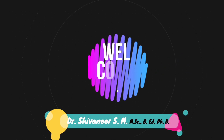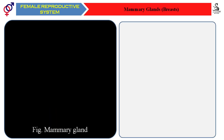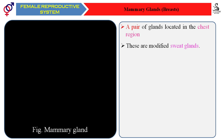Welcome to our biology class. In this class we are going to understand mammary glands, which are also called breast glands. In humans there is one single pair of mammary glands located in the chest region. Based on the presence of this mammary gland, we have made a separate class in the sub-phylum Vertebrata as Mammalia. These mammary glands are modified sweat glands.